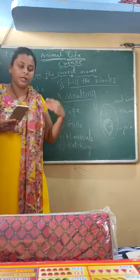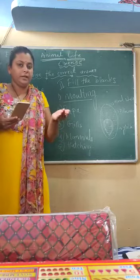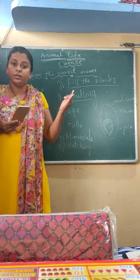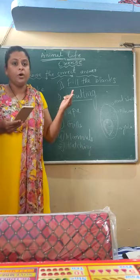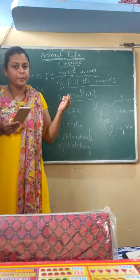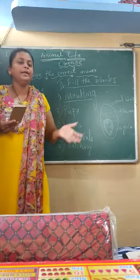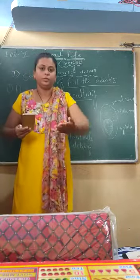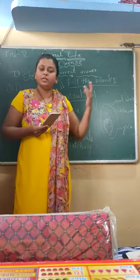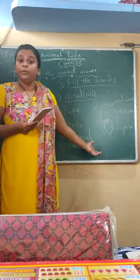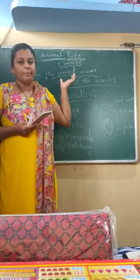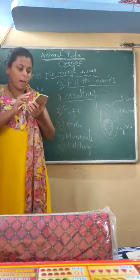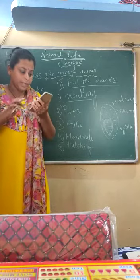The fourth question is: what are mammals? Mammals are the animals which give birth to young ones. For example: human beings, monkeys, lions, tigers, horses, donkeys, dogs, cats, and even whales also come under mammals. These all are called mammals. I hope you have copied this answer.